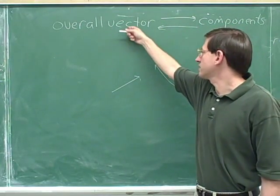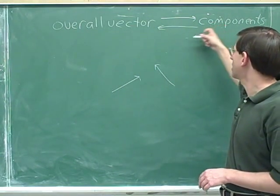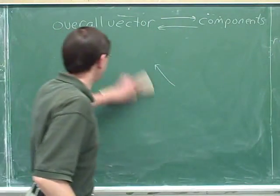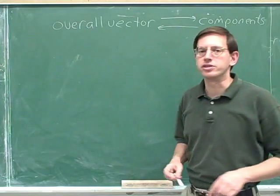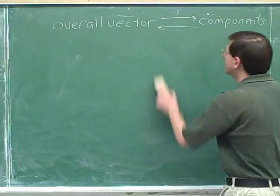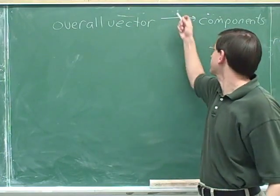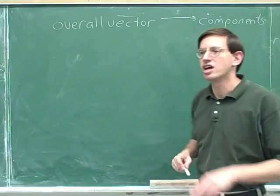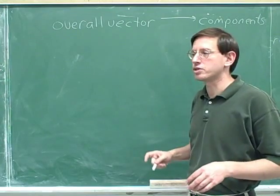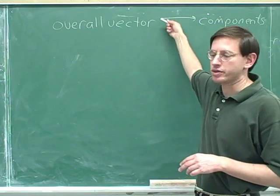One job is taking the overall vector and figuring out the components. Another job is that if we're told what the components are, we should be able to figure out what the overall vector is. Those are the two things we're going to learn in this portion. We're going to start by learning how to take an overall vector and break it down into components, but going the opposite direction — from components to overall vector — is also very important.